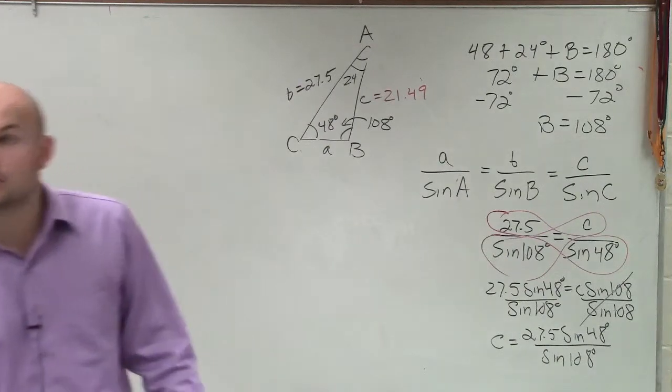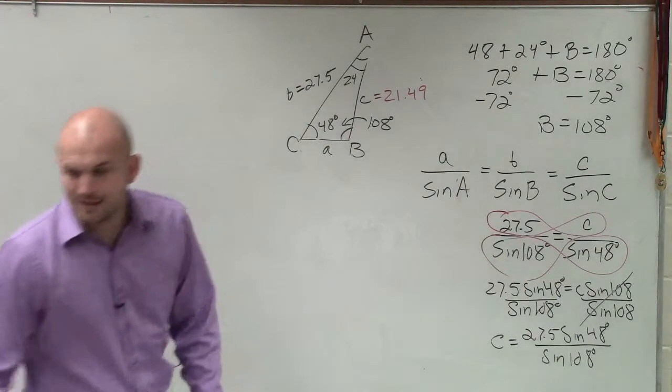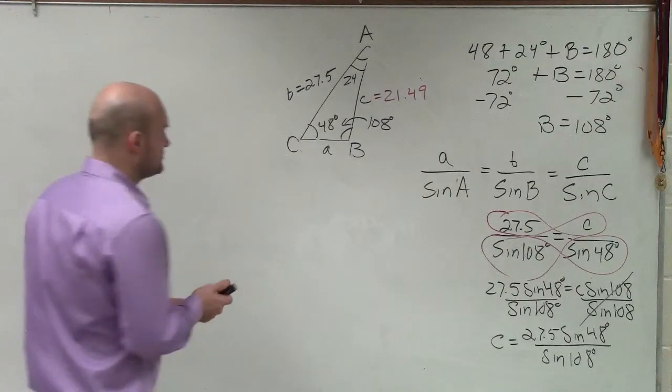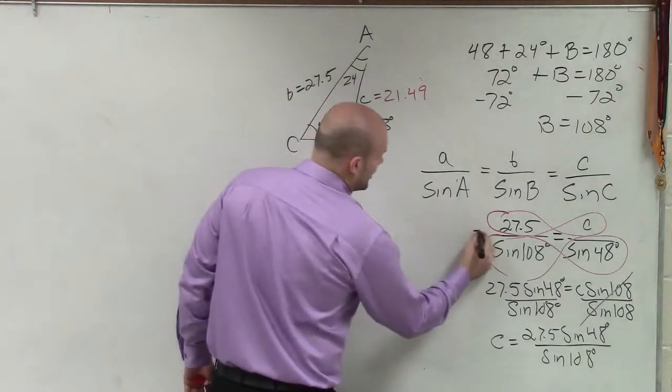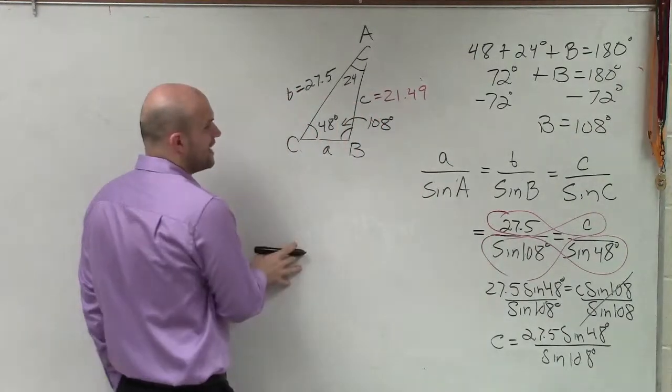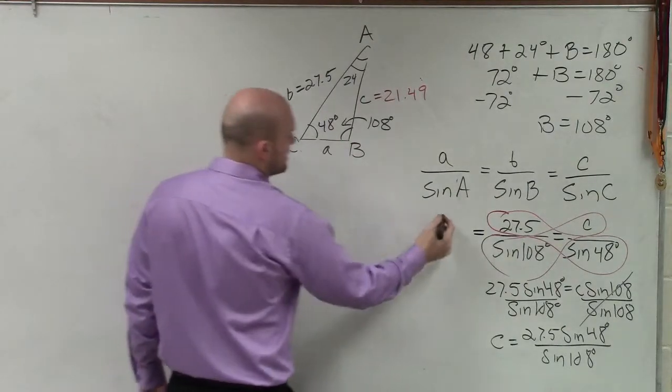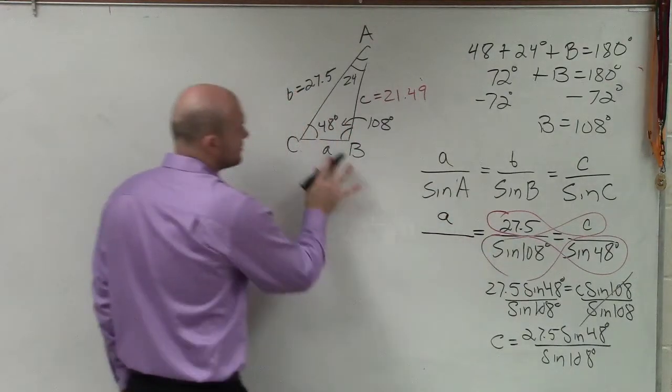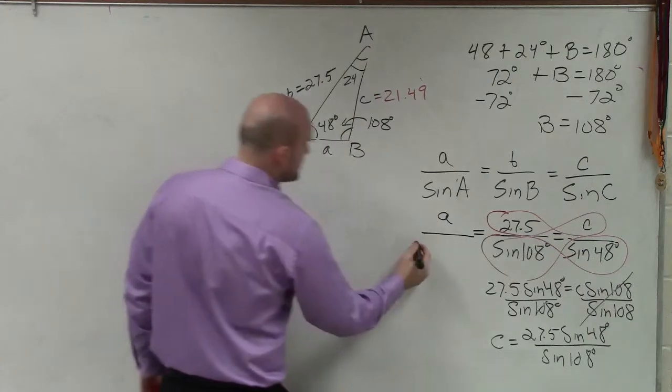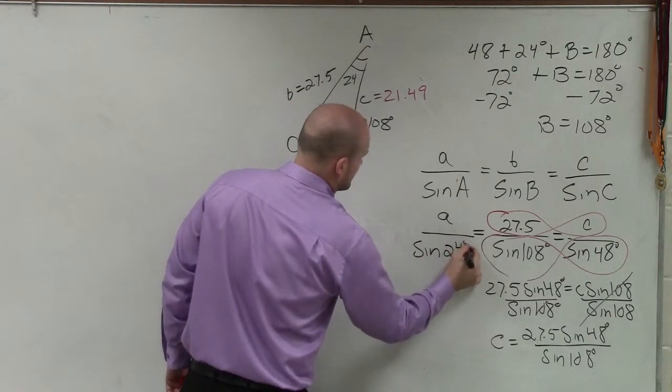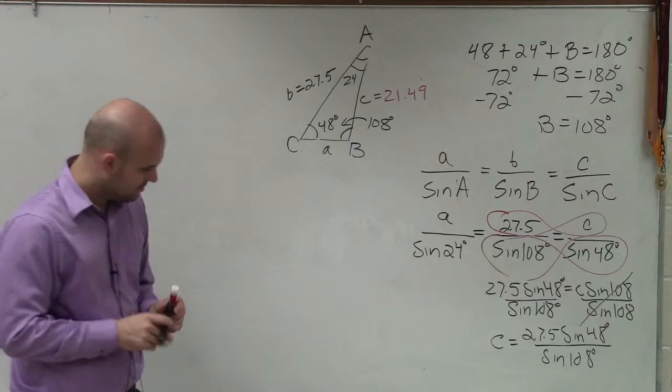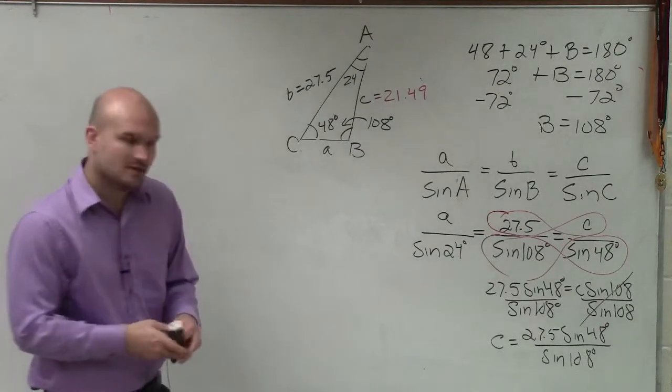So to do for A, I'm going to do the exact same thing. We already know what B is. I'll just take our A. So A, we don't know the side length A, but we do know the sine of A, which is 24 degrees. Okay?